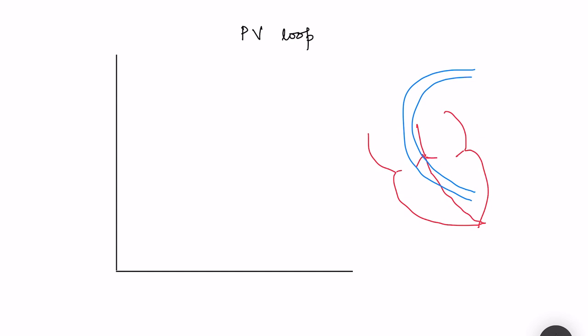The pressure-volume loop explains the relationship between left ventricular volume, plotted on the x-axis, and left ventricular pressure, and the changes which take place in this left ventricular pressure and volume in one cardiac cycle — one beat basically. When understanding the pressure-volume loop, there are certain key points to remember: at how much volume, what will be the ventricular pressure. For that, we have to start with the phases of the cardiac cycle.